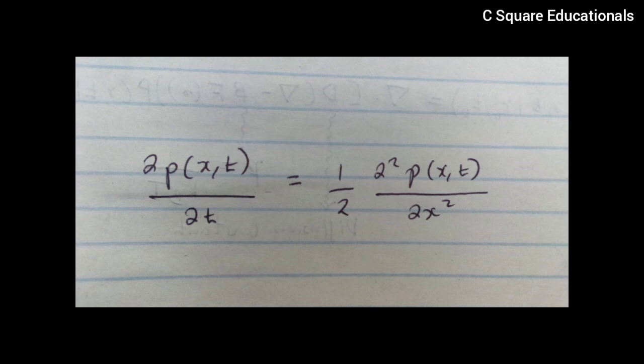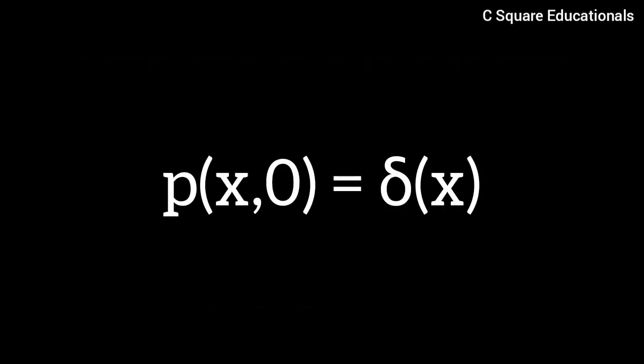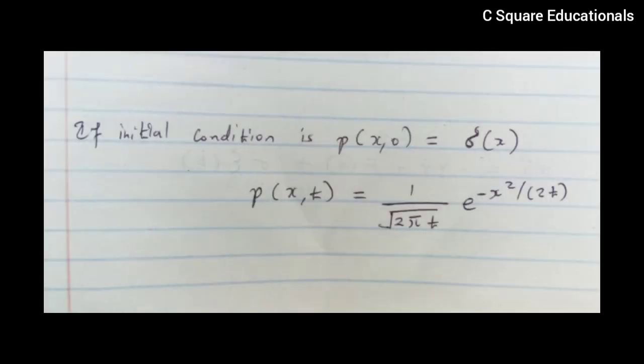If the initial condition is p(x,0) equivalent to delta(x), the solution is p(x,t) equivalent to 1 over root 2 pi t e raised to negative x squared on 2t.